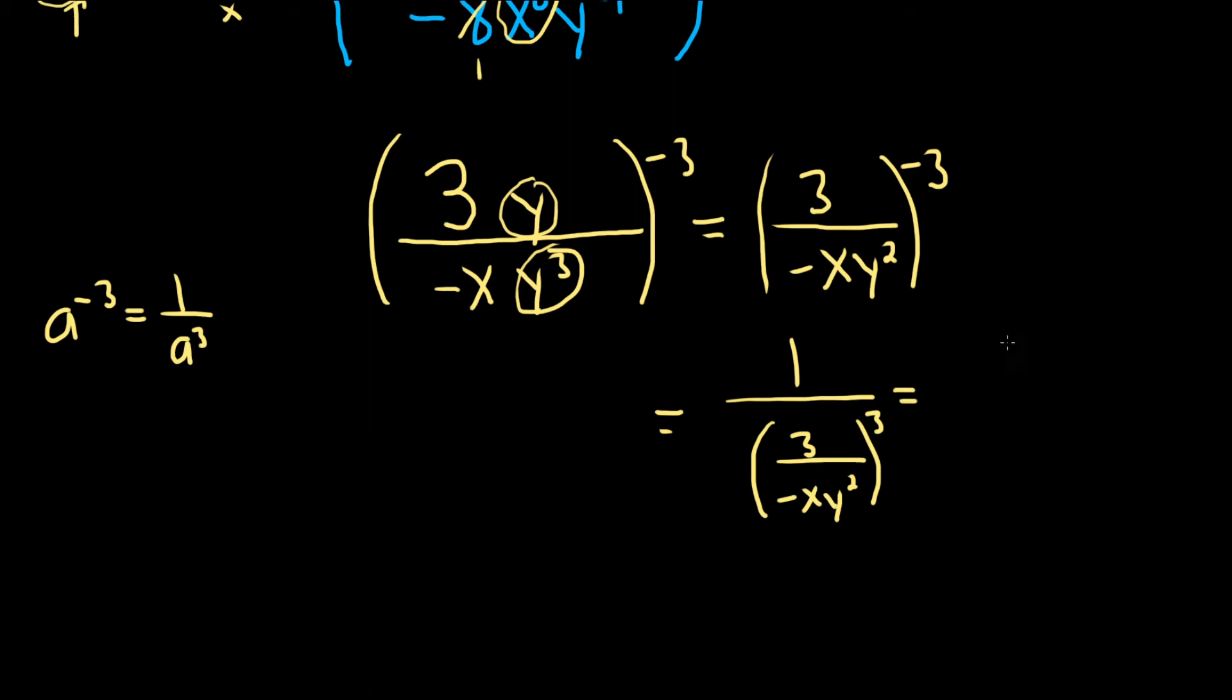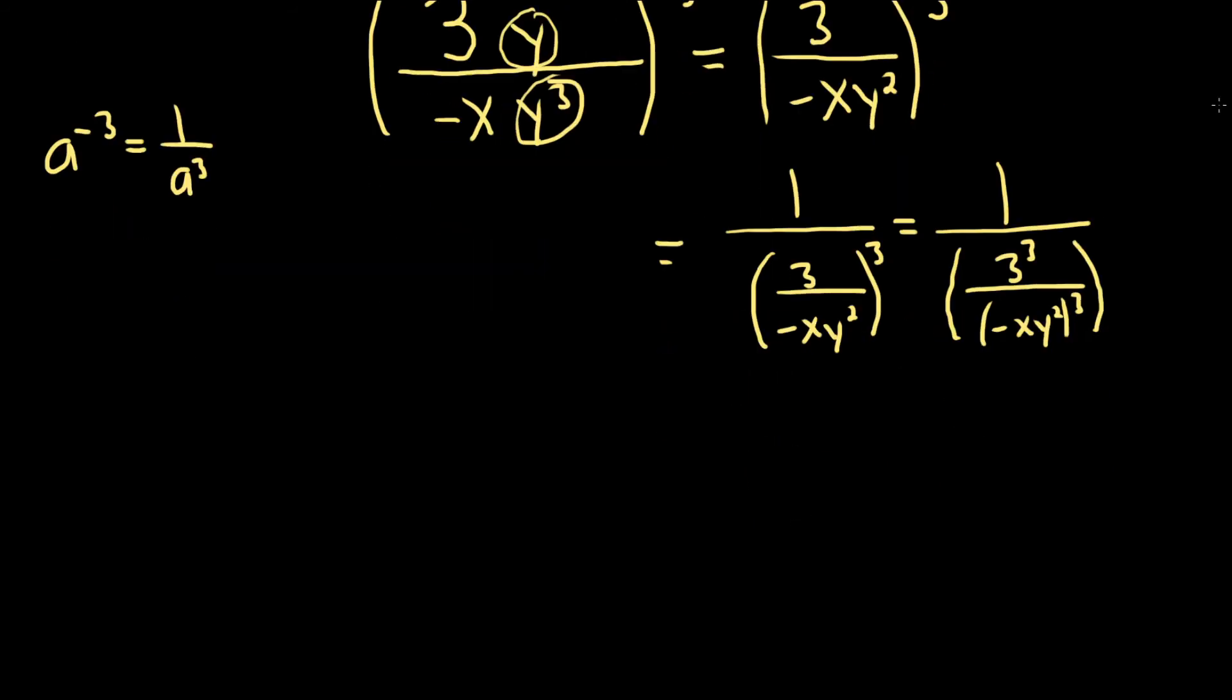And now we can cube each piece. So it's one over three cubed over negative x, y squared cubed. And this is in parentheses. And when you divide, you really multiply by the reciprocal. So it's really one times negative x.